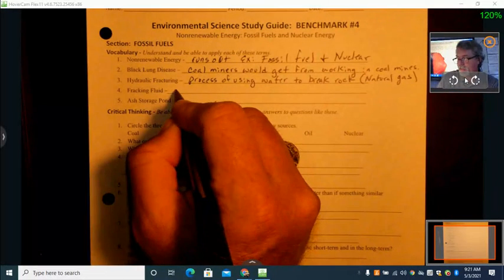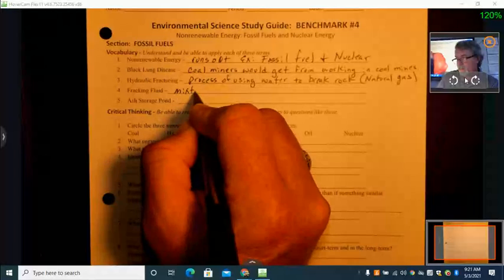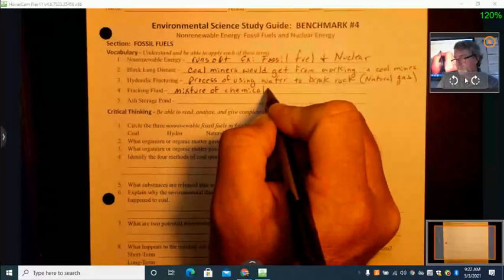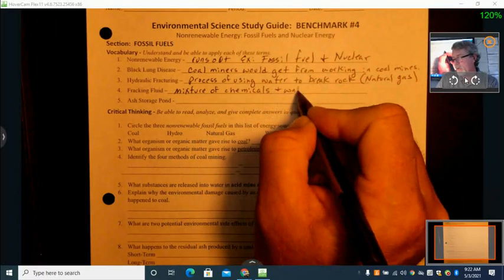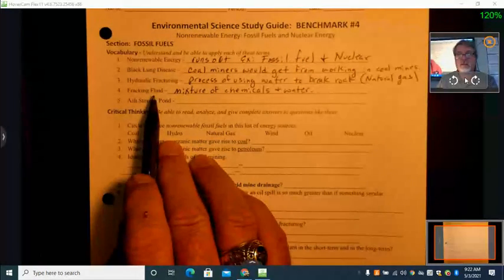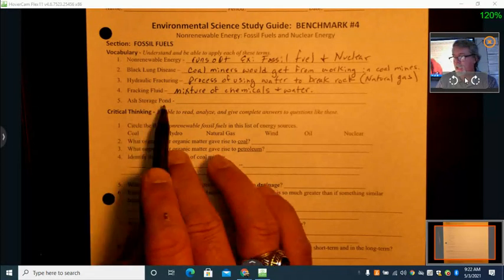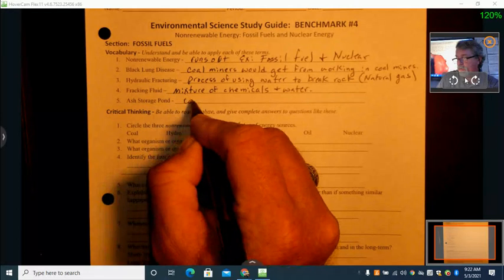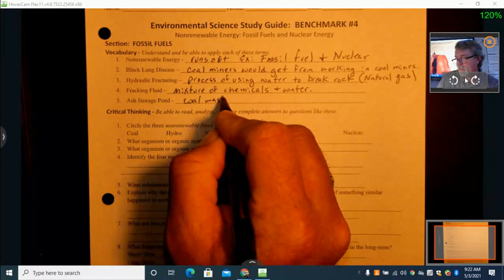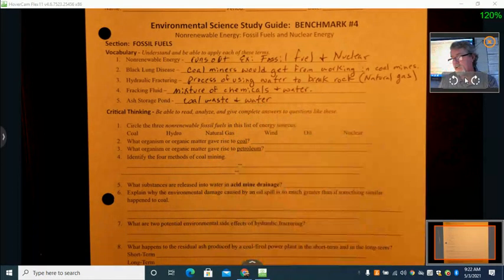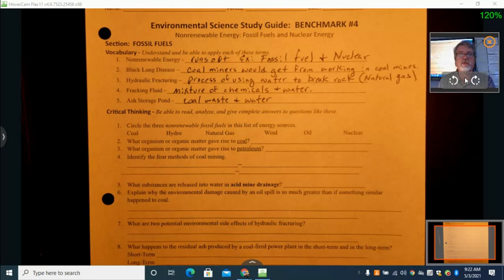Fracking fluid is a mixture of chemicals and water. The reason we have that on there is because that's one of the negative problems - using that fracking fluid because it comes back out as pollution. Ash storage pond is coal waste and water. That's where we store it. It's a storage container for the coal waste and water.